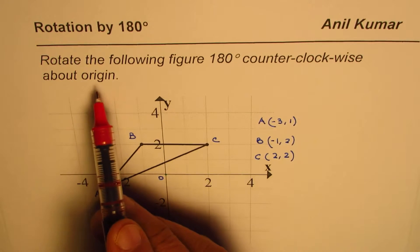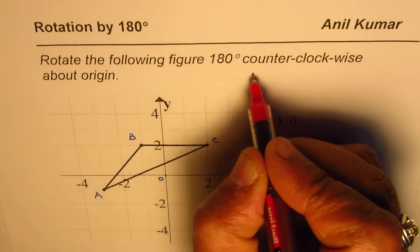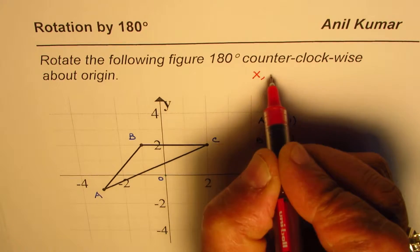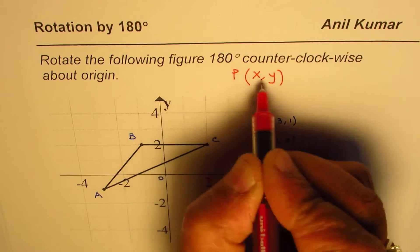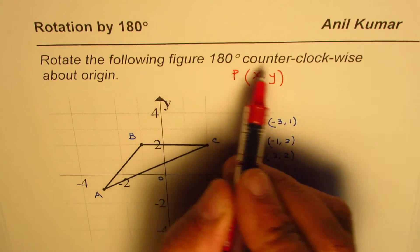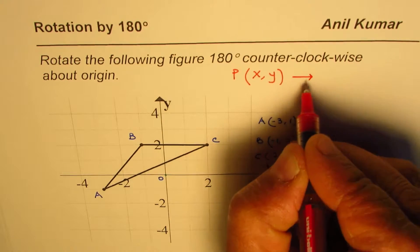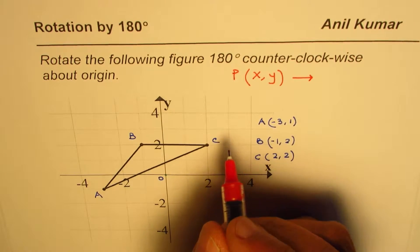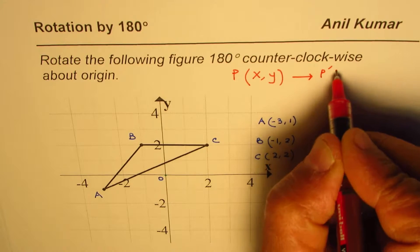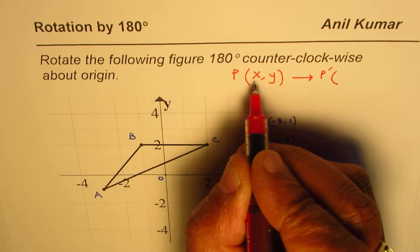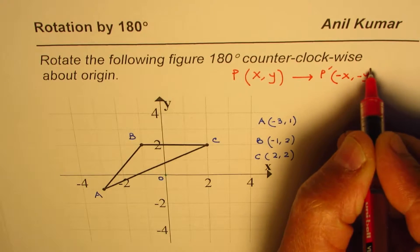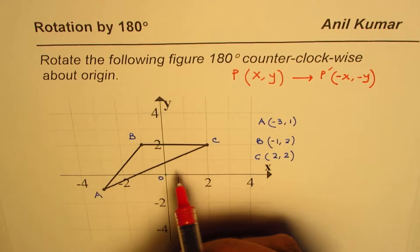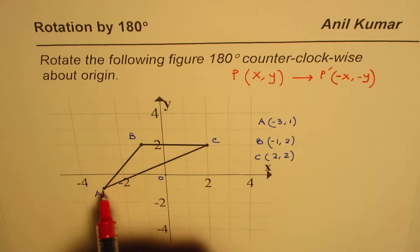Now whenever we do 180 degrees counterclockwise rotation about the origin, if the original points are, let's say, X and Y, any point P is (x, y), then after this rotation the coordinates of the points change and we get the image point with the coordinates as (-x, -y).